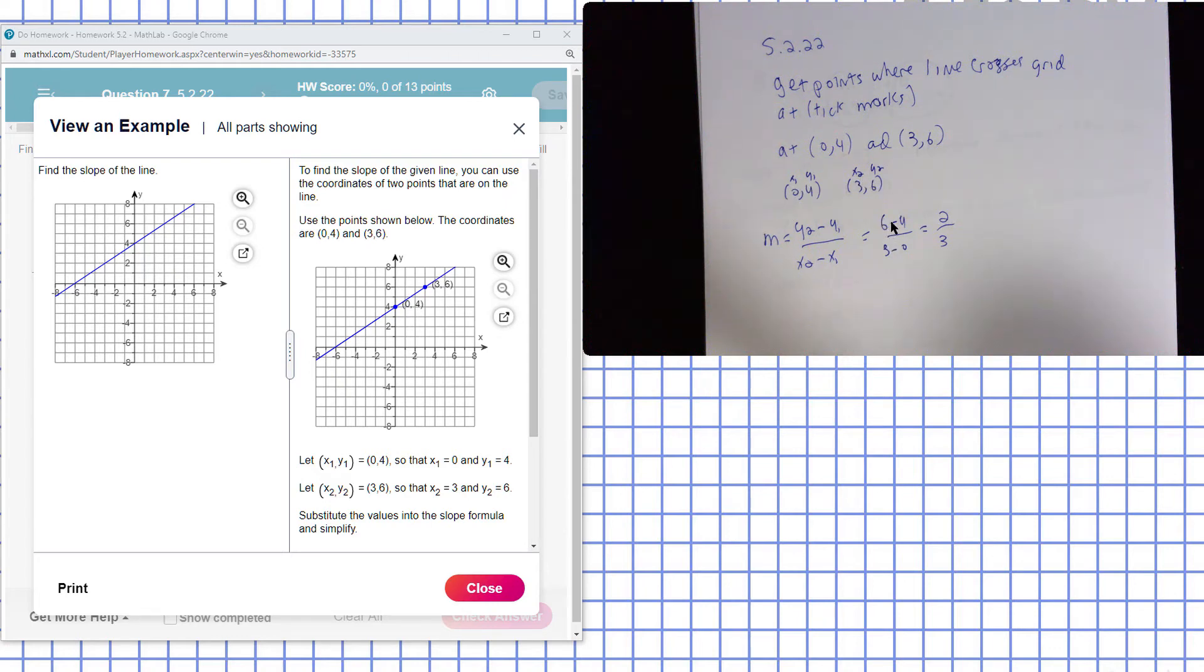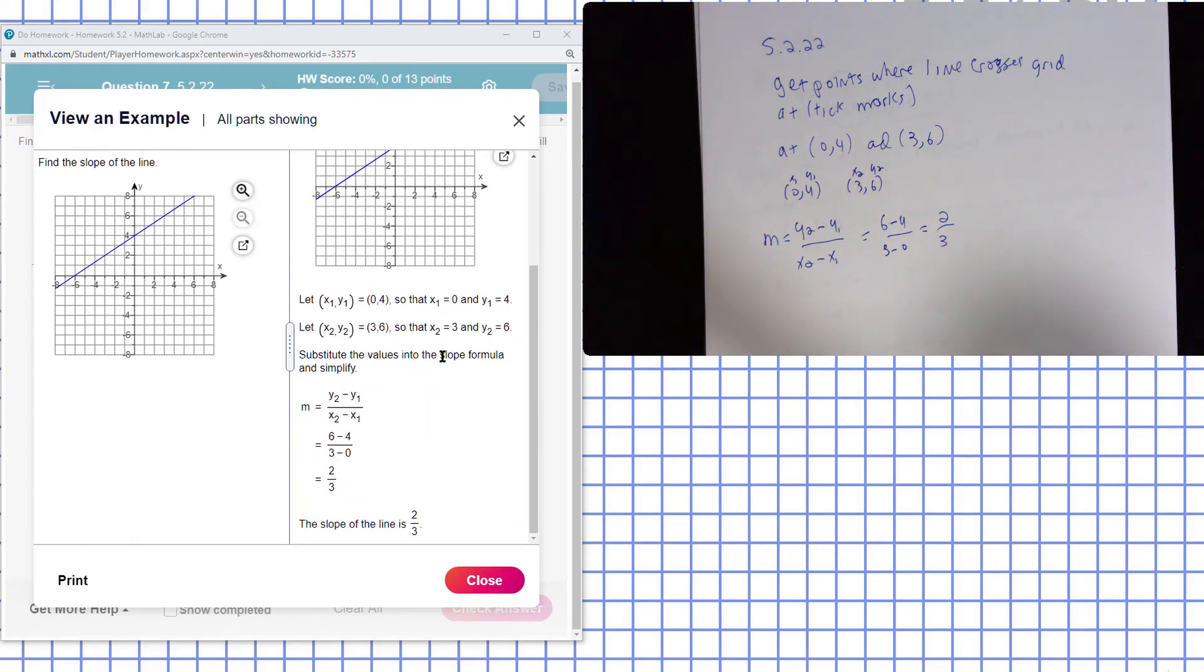6 minus 4 is 2 and 3 minus 0 is 3. So my slope in this case is 2 thirds. So I agree.